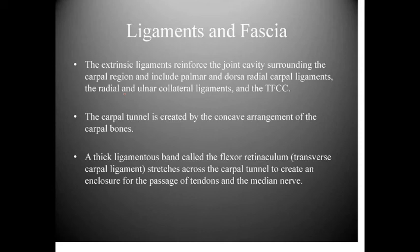The midcarpal joint is formed between the proximal and distal carpal rows. Intercarpal joints exist between carpals within each row. The carpometacarpal joints form between carpals and metacarpals. The carpal tunnel is created by the concave arrangement of carpal bones, with the flexor retinaculum — or transverse carpal ligament — stretching across to create an enclosure for the passage of tendons and the median nerve.